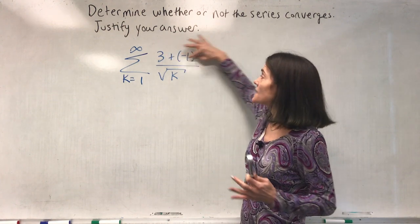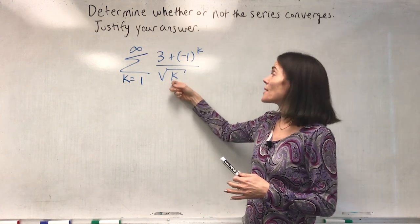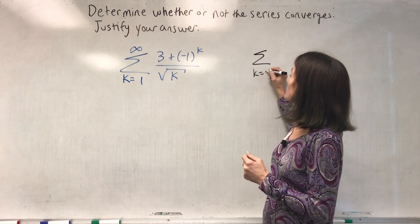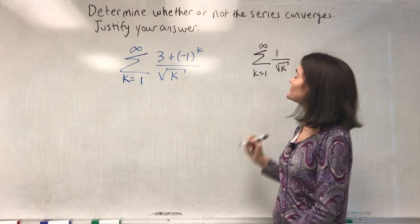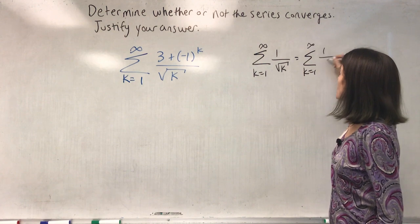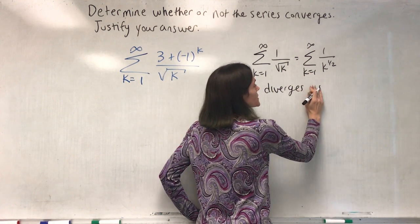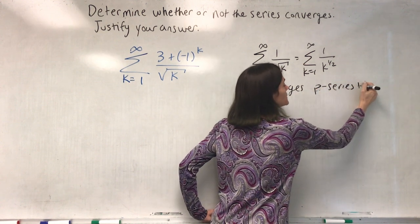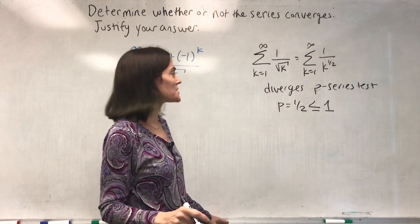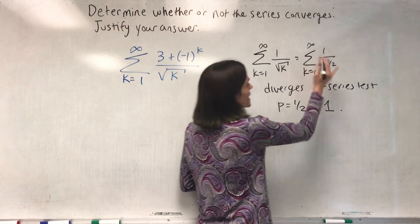What does this look like? The numerator is three plus minus one to the k, which is either four or two. The denominator is telling us what it looks like: a p-series. We consider the series one over the square root of k, which is one over k to the one-half. This is divergent as a p-series, where p is one-half, which is strictly less than one. The p-series test says it diverges when p is less than or equal to one.